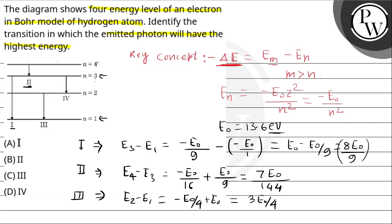Comparing all values: 8E-naught over 9 is the maximum. So the first transition, from 3 to 1, will release the highest energy photon. Option A is the correct answer, because it has the highest value of delta E, and hence will release the highest energy photon. Hope you understand the solution — thank you very much and all the best.